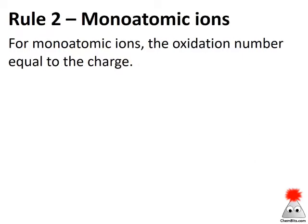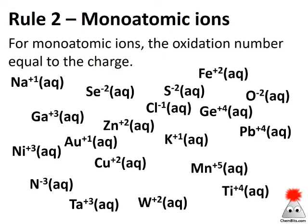Rule number two: for monoatomic ions, the oxidation number is equal to the charge. We can look at these very quickly and say the oxidation number is plus one, plus five, or minus three. These are the cases that are a little more familiar to us, having already worked with charge.